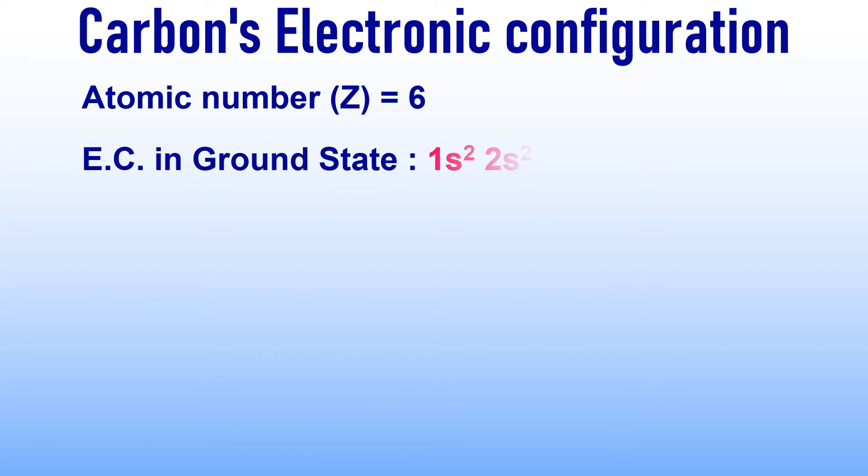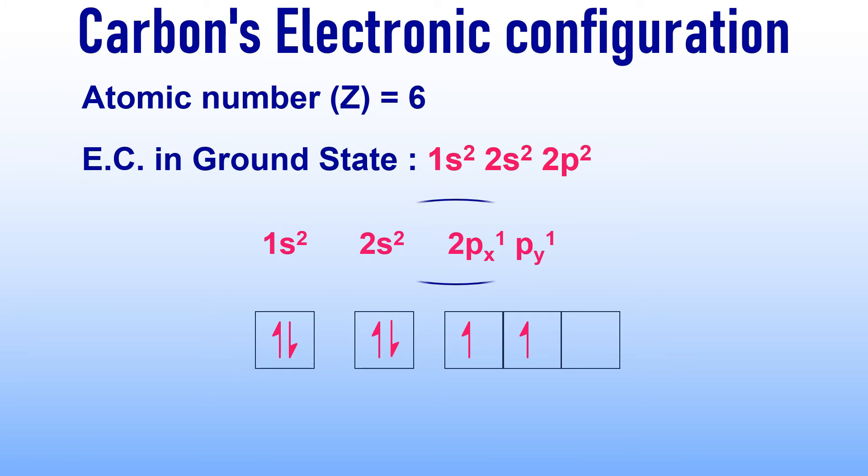Let us begin by examining the electronic configuration of a carbon atom with an atomic number of 6. Its ground state electronic configuration is 1s² 2s² and 2p². This can also be expressed as 1s² 2s² 2px¹ and 2py¹. It is evident that there are 4 valence electrons, of which only 2 are unpaired.